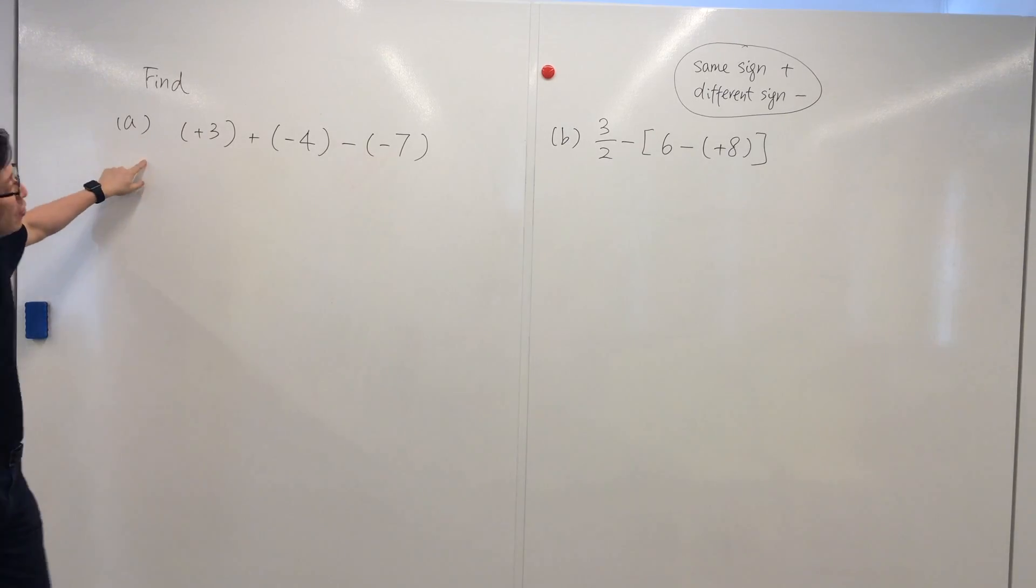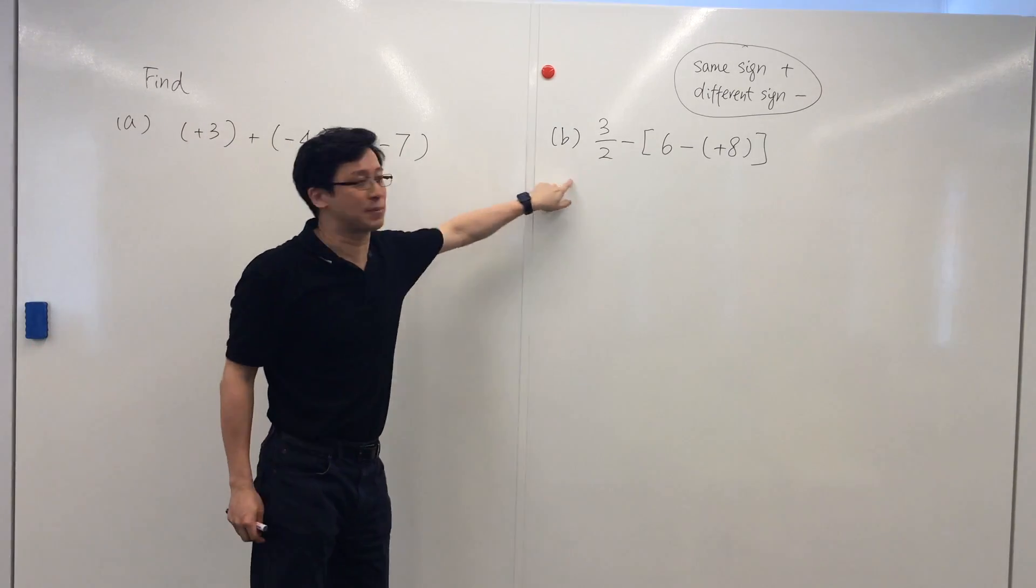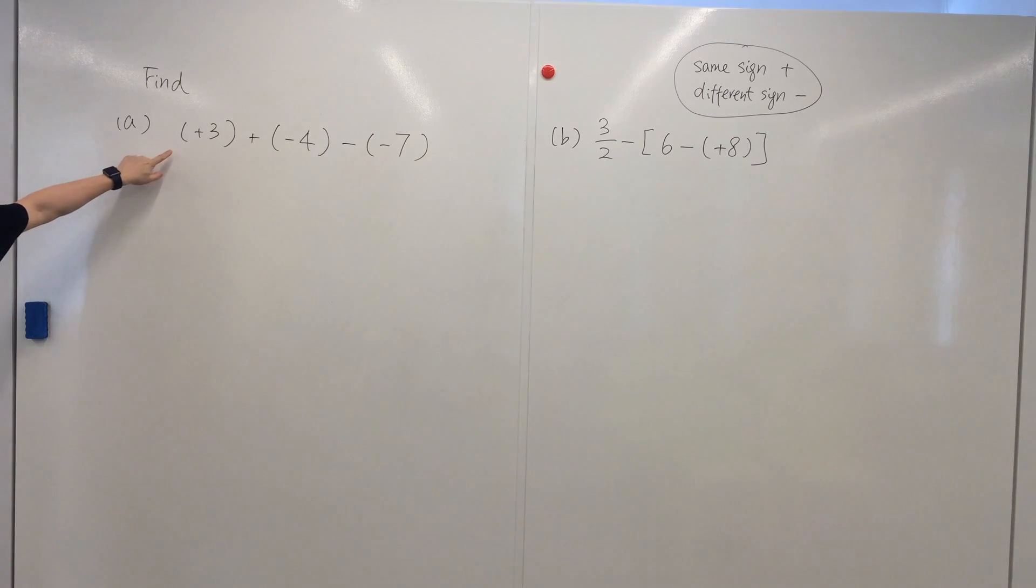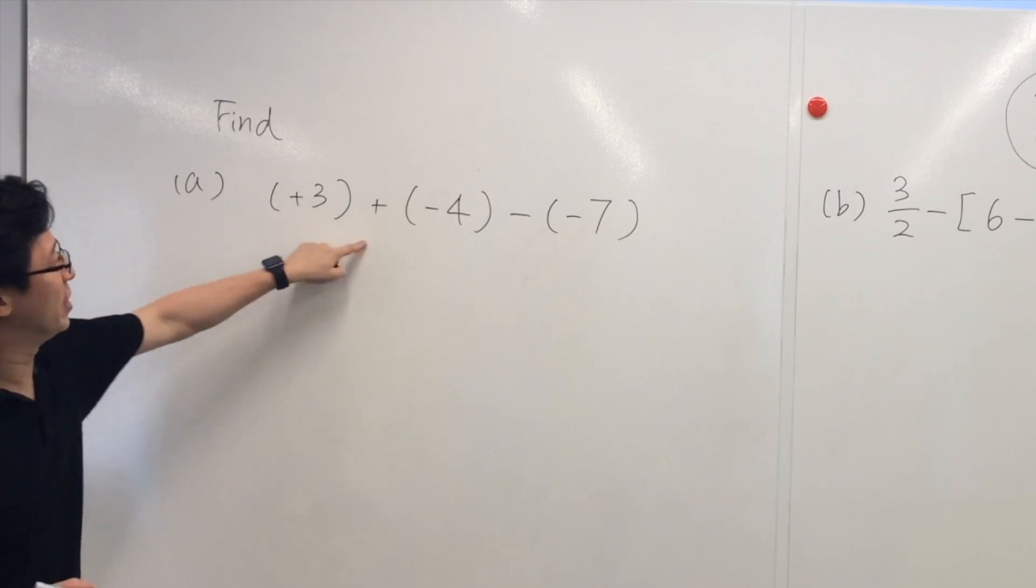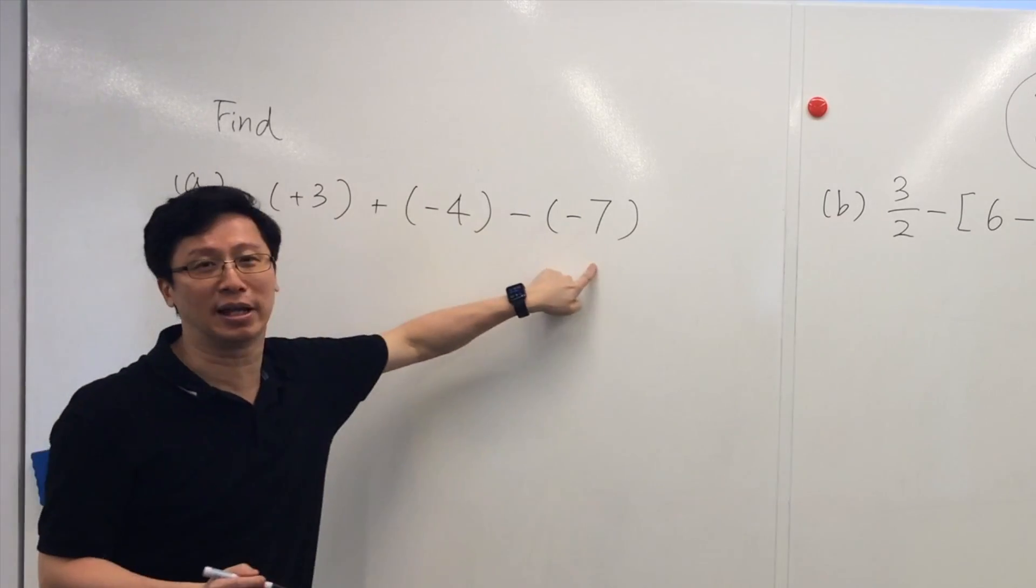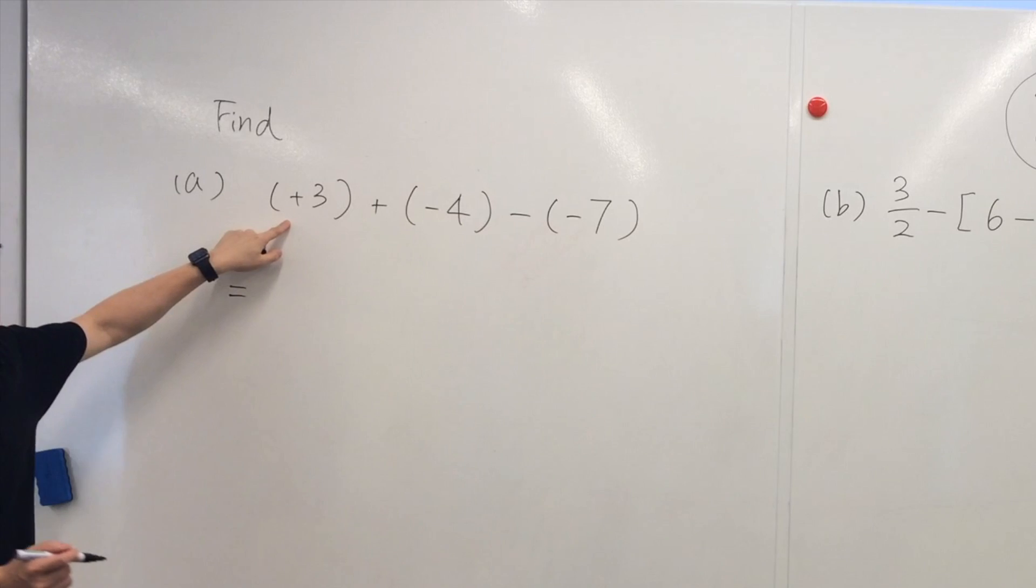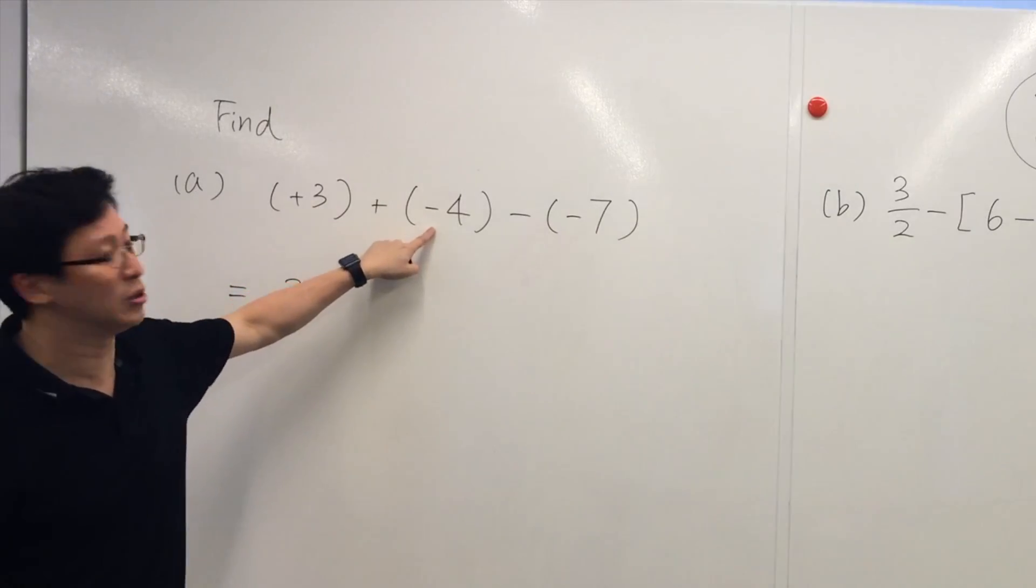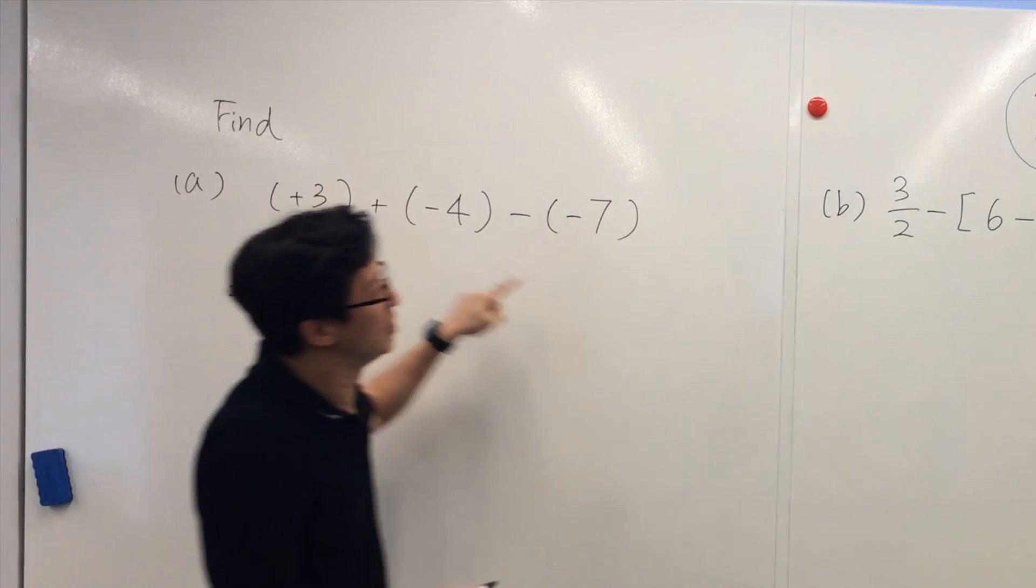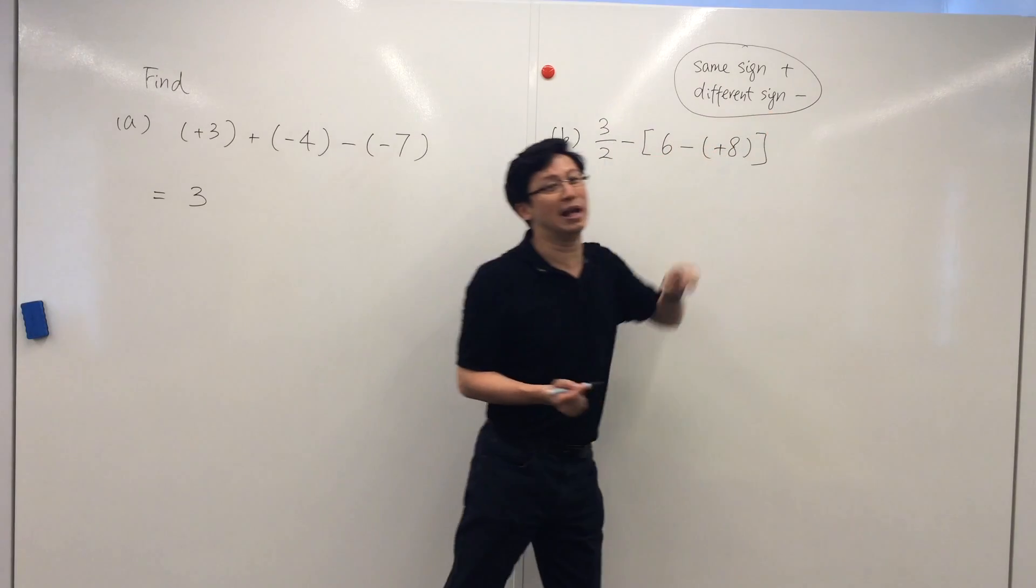And now we are going to find the value of these two expressions. We can simply use the removing bracket method. So positive 3 plus negative 4 minus negative 7. We start from the first bracket: positive 3 means just write 3. Plus a negative number—they are different signs—so we end up with a negative number, minus 4.